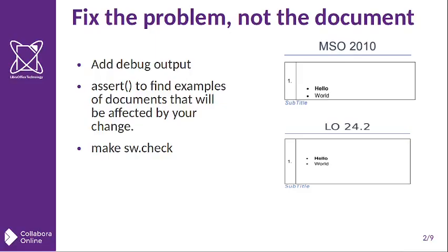We want to, of course, fix the problem and not just the document that we're working on. And so once I have my patch developed, I add some debug output and asserts to find examples of the documents that will be affected by the change, and then run a make check.